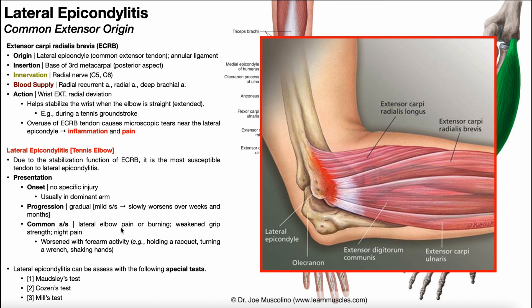Common symptoms include lateral elbow pain directly over the lateral epicondyle or a little bit distal to it, because we're talking about the tendon. Patients often describe the pain as having a burning quality, and they also have weakened grip strength — you would assess that with a handheld dynamometer and compare it to the unaffected side. Oftentimes they also have pain at night. Additionally, the radial nerve, as it crosses from the brachium into the forearm, passes very close to this area, so the inflammation associated with the common extensor tendon can irritate the radial nerve. Patients with lateral epicondylitis may therefore also have a positive radial nerve tension test.